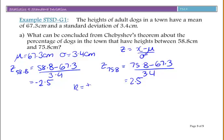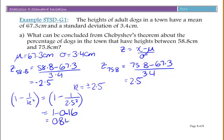So k equals plus or minus 2.5. Then 1 minus 1 over k squared gives us 1 minus 1 over 2.5 squared. You get the same value whether it's minus or positive. So you get 1 minus 0.16, which is 0.84 or 84%.